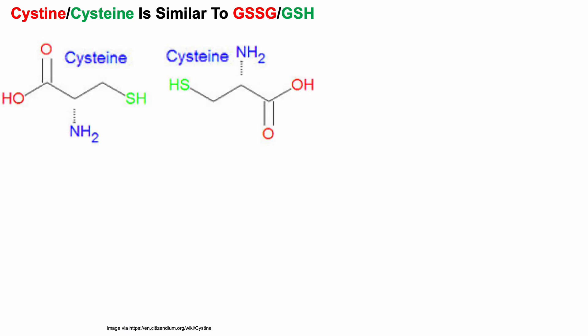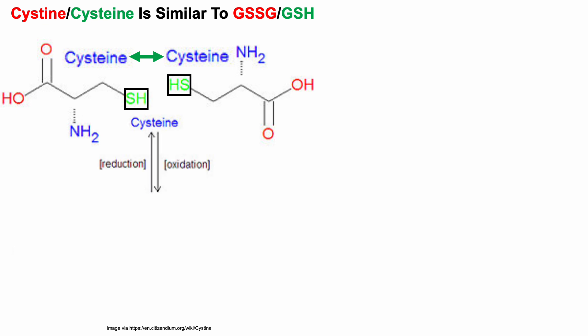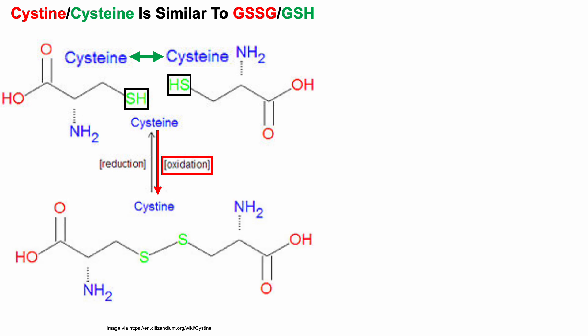Cysteine to cystine is similar to the GSSG to GSH ratio. Starting with two molecules of the amino acid cysteine, we can see that it also has sulfhydryl groups, SH. In the presence of oxidative stress, those sulfhydryl groups become oxidized such that the two cysteine molecules become one cystine molecule — the individual sulfhydryl groups have now become oxidized, forming a disulfide bridge. So again, two molecules of cysteine get converted into one oxidized molecule, cystine. This is very similar to what glutathione looks like in its reduced and oxidized state.